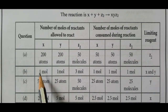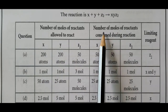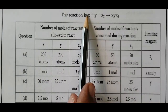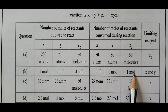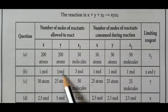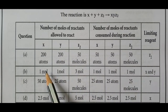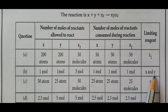Second case: 1 mole of X, 1 mole of Y, 3 moles of Z2. The lowest value is 1 mole, so 1 mole each of X, Y, and Z2 reacts. X and Y are completely used up; Z2 has 2 moles excess. Therefore, the limiting reagents are X and Y.